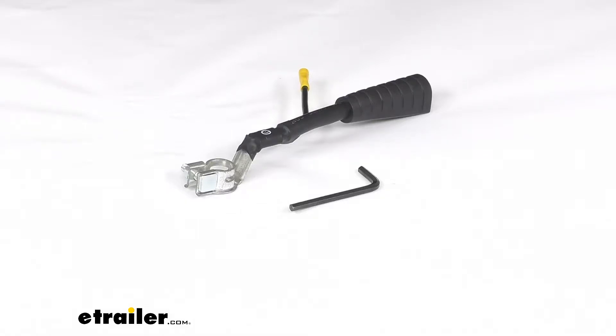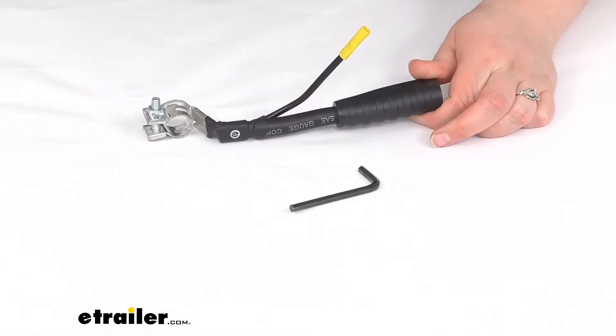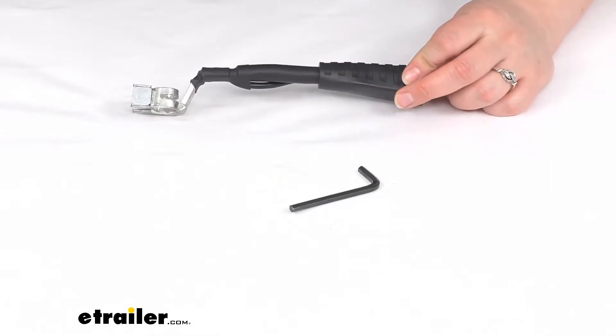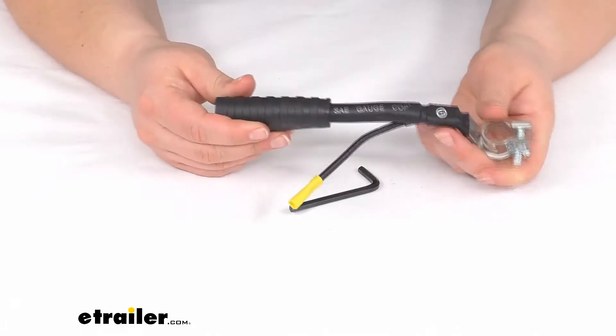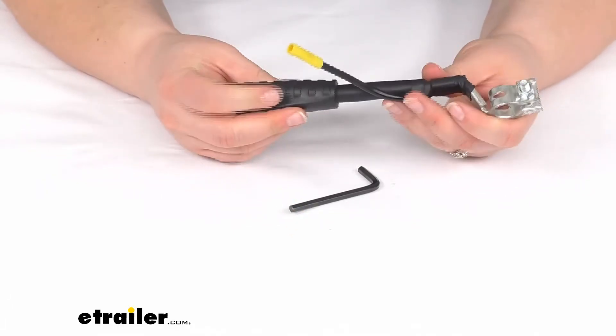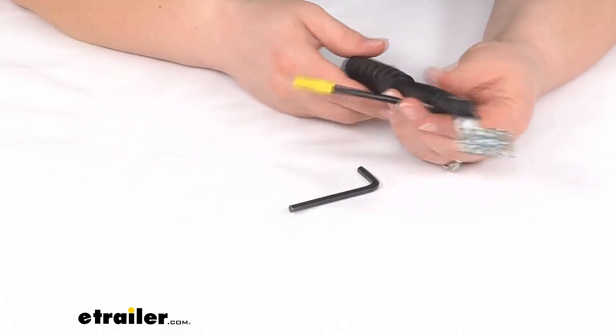Hey everyone, I'm Ellen here at eTrailer.com and today we're taking a look at the DECA Quick Connect Battery Cable Split. This is going to help us replace a damaged or corroded cable end on our battery with a new piece.